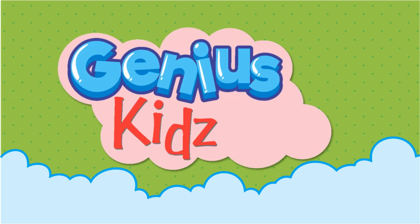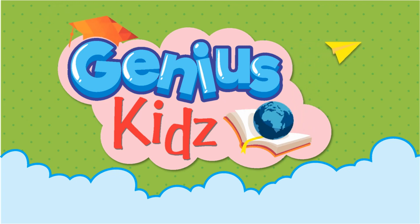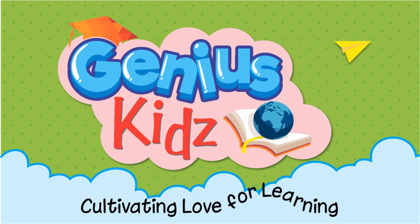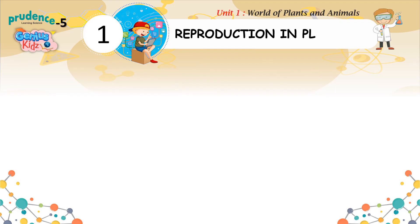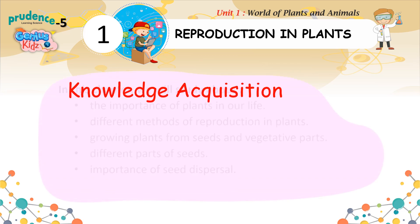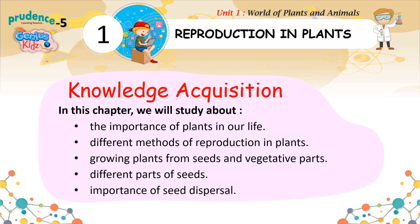Genius Kids — Cultivating Love for Learning. Reproduction in Plants: Knowledge Acquisition. In this chapter, we will study about the importance of plants in our life, different methods of reproduction in plants, growing plants from seeds and vegetative parts, different parts of seeds, and the importance of seed dispersal.